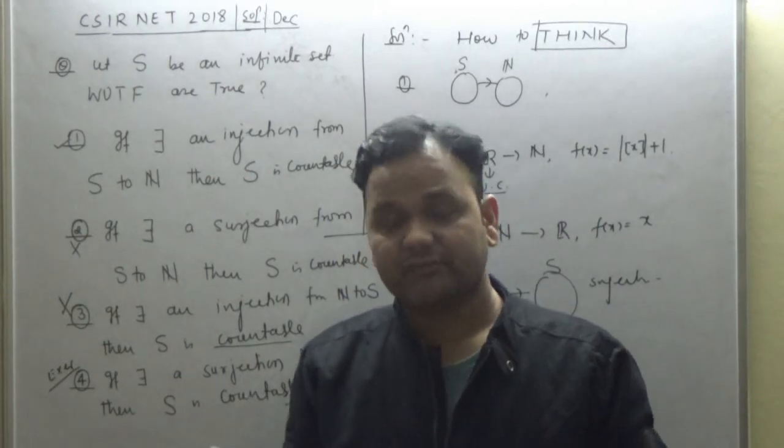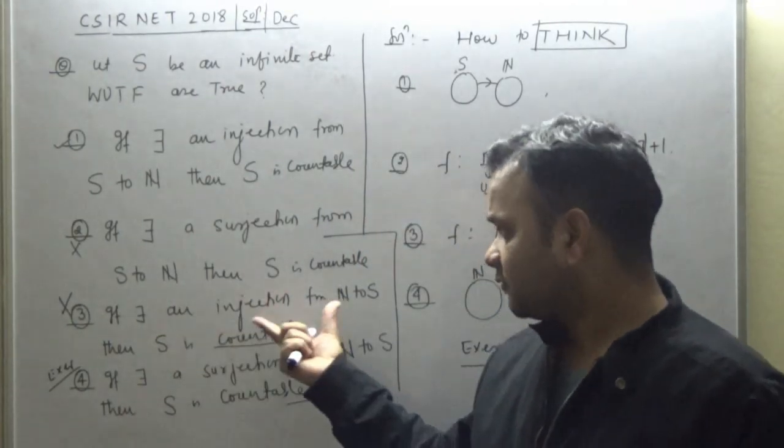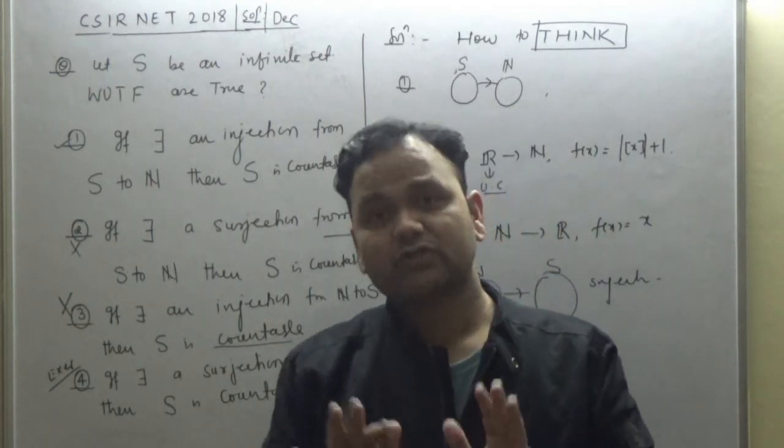So this is not enough to say whether a set is countable. Second option: it's not enough. If you are getting surjection from S to N, that does not imply that S is countable. We need more things.